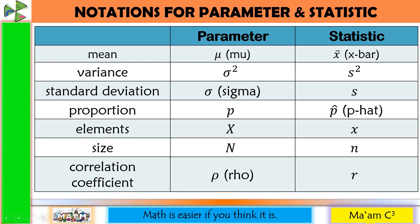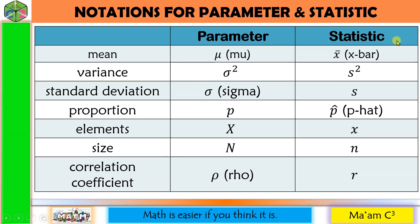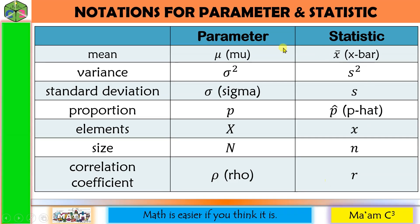Here are the notations for parameter and statistic. A parameter is a numerical value that describes the characteristics of a population. For the mean of a population, we use mu; for variance, we use sigma squared; and for standard deviation, we use sigma. A statistic is a numerical value that describes the characteristics of a sample. For the mean of a sample, we use x-bar; for variance, we use s squared; and for standard deviation, we use s. We also use capital X and small x, capital N and small n, for elements and size respectively. For parameter, we usually use Greek letters, and for statistic, we use Roman letters.